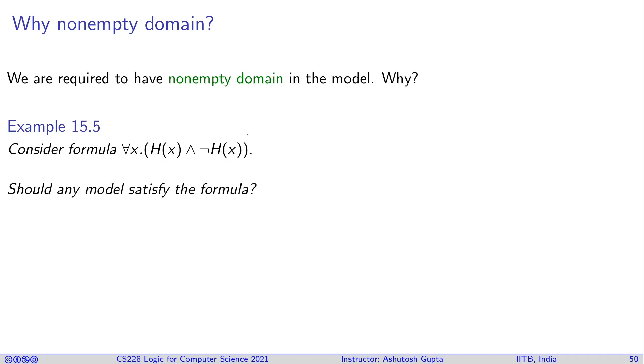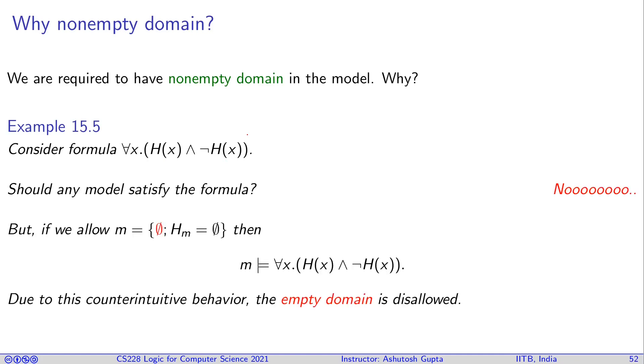Clearly, this formula must be false for any model, right? But if you choose this model in which m is empty, and E_m naturally, consequently, is empty, this formula is satisfied because it's for all x. Since there is no x, this formula holds true, and therefore it breaks our intuition. Therefore, we cannot have an empty domain, and therefore empty domain is not allowed.